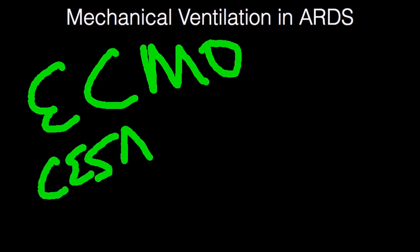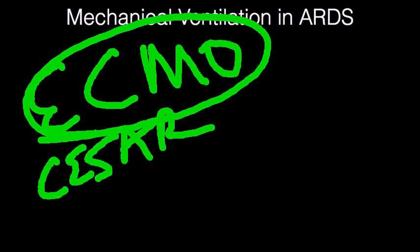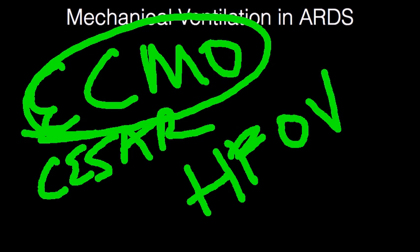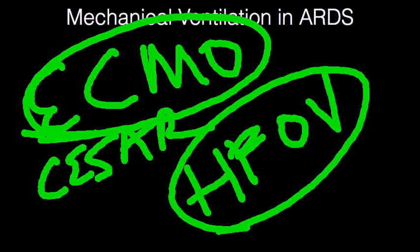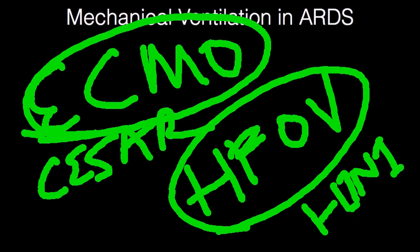Other modes that are less frequently used but can be equally useful when oxygenation remains difficult include extracorporeal membrane oxygenation (ECMO), based on the CESAR trial. Speak to your institution about ECMO experience and availability. Another option is high-frequency oscillatory ventilation (HFOV). Much of the HFOV data comes from the pediatric population, but the H1N1 epidemic provided additional data on adult ARDS patients.